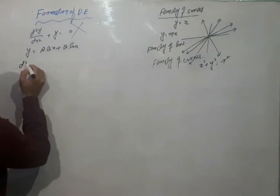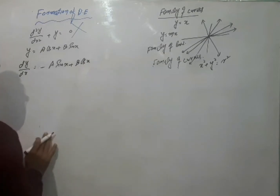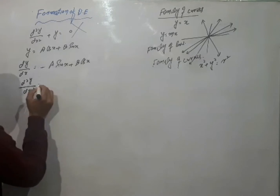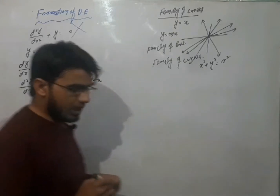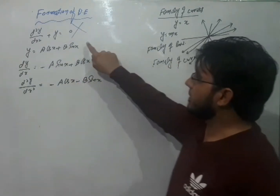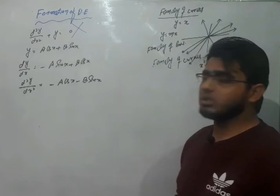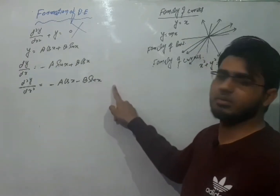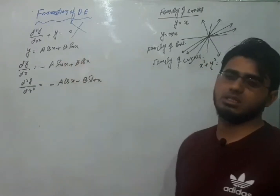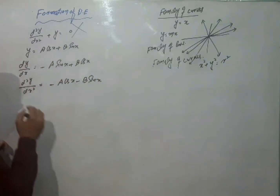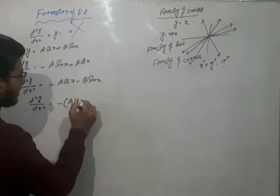पहला derivative: dy/dx = −A sin x + B cos x. अगेन differentiate करते हैं with respect to x: d²y/dx² = −A cos x − B sin x, which is equal to minus(A cos x + B sin x).